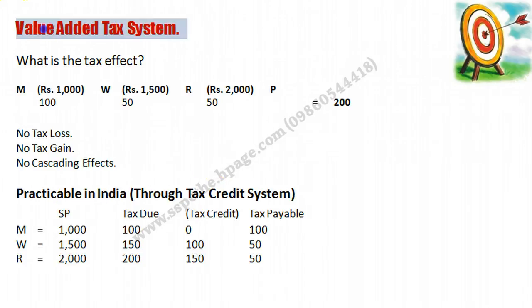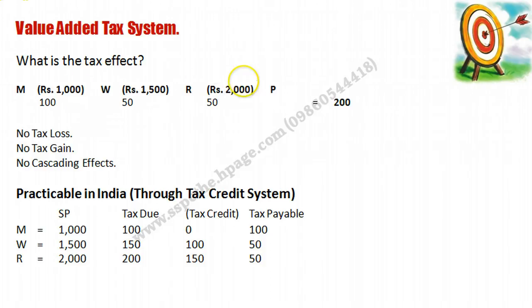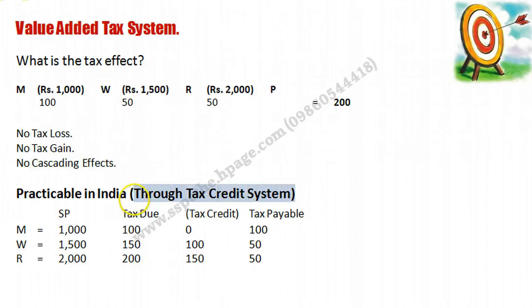After looking at all three systems, let's talk about VAT — the Value Added Tax system. The manufacturer sells at Rs. 1000, paying Rs. 100 tax. This is the first sale; no tax credit applies, so tax payable by the manufacturer is Rs. 100. For the wholesaler, selling at Rs. 1500 means tax due is Rs. 150. However, by showing the purchase invoice — which records the Rs. 100 tax already paid to the manufacturer — the wholesaler gets a credit of Rs. 100, and finally pays only Rs. 50.